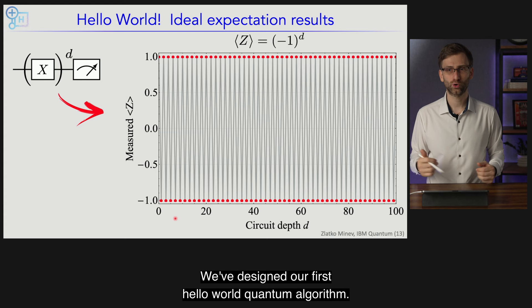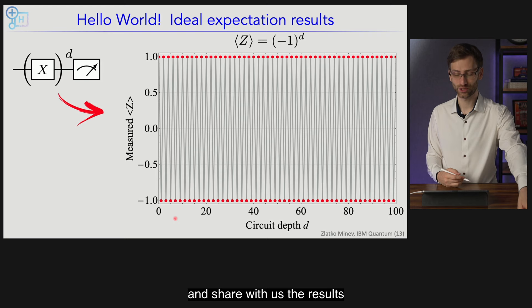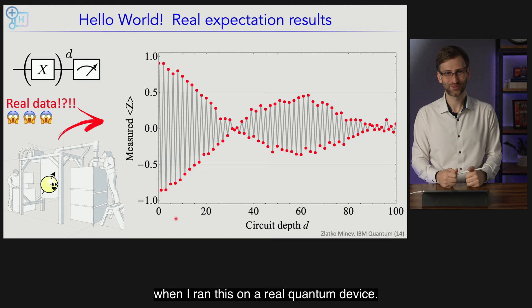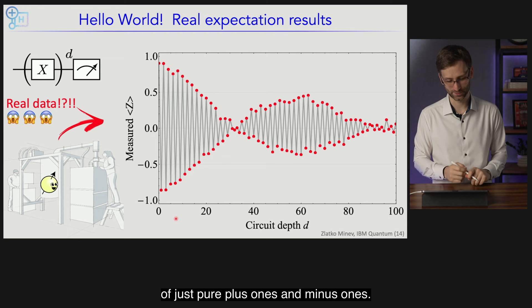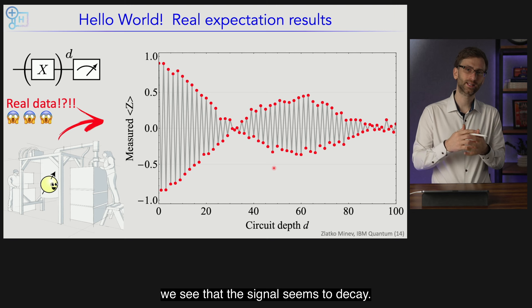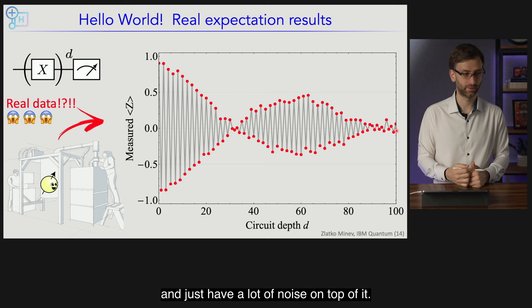So we've designed our first hello world quantum algorithm. Let's run it on a real quantum device — I challenge you to try this in Qiskit yourself. This is what I got when I ran it: not exactly the pure +1s and -1s we saw in theory. At short depth it looks right, but as depth increases the signal decays, there are fluctuations on top, it goes to zero at one point, then comes back oscillating and decaying with a lot of noise.